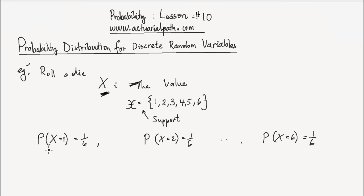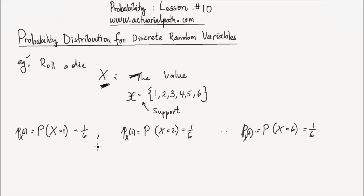Another way to write the probability of x equals 1 is P of x of 1, and this one P of x of 2. And here I could write this as P of 6. So for any x in the support, I can find P of x of little x to be 1 over 6 in this example, for x in the support 1, 2, 3, 4, 5, or 6.